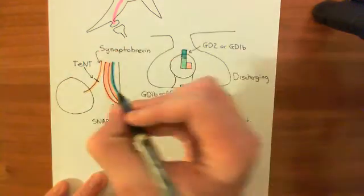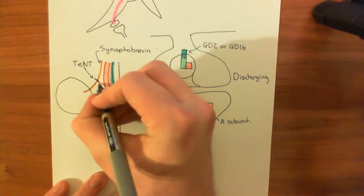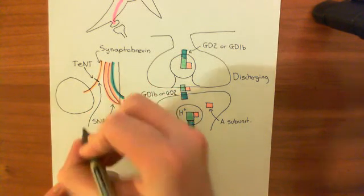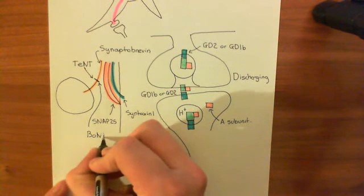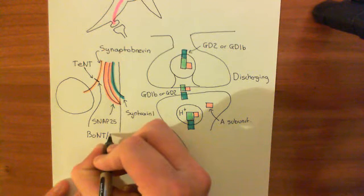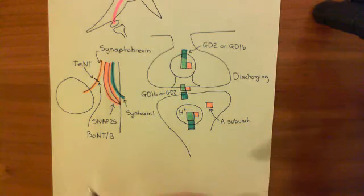Interestingly, it cuts at the same point as the botulinum neurotoxin type B. However, it cuts it in different cells than botulinum neurotoxin B. Botulinum neurotoxin B cuts it in the axon terminal of the alpha motor neurons.